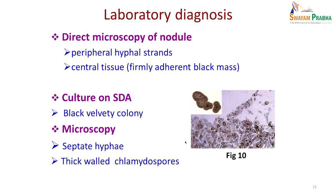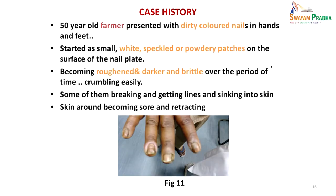Another kind of infection very commonly seen in skin OPDs is this case of a 50-year-old farmer who presented with a long-standing history of dirty-colored nails in hands and feet. These started as small white speckled or powdery patches on the surface of the nail plate, but over time became roughened, darker, brittle, and crumbling. The nail was falling off in some cases, breaking and getting lines; others were sinking into the skin and the skin became sore and retracting at those points. This history was given over a few months, starting from one nail and spreading to others.